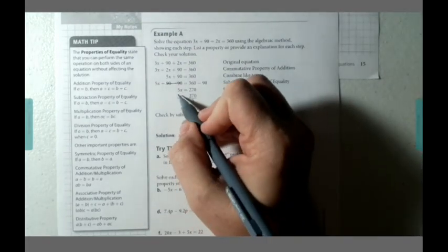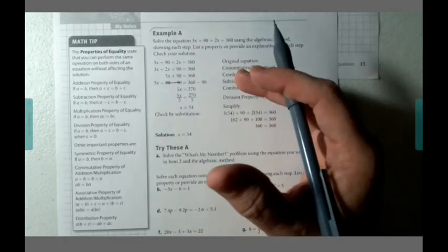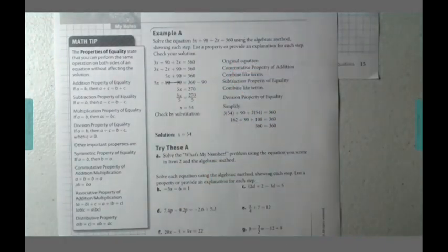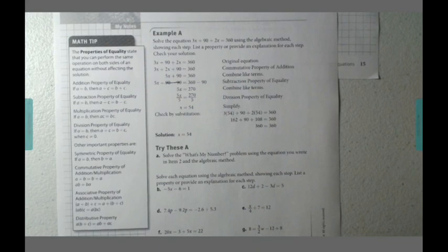Now, the last thing that's attached to that x over there is a coefficient. When we have a number written right in front of an x, it means that we're going to multiply. So, to do the inverse operation of multiplication, we're going to divide.